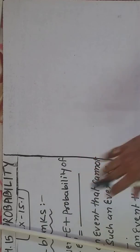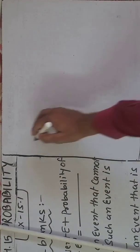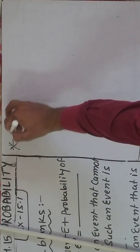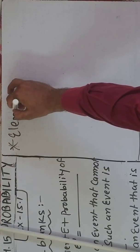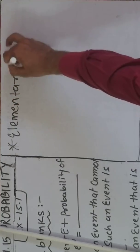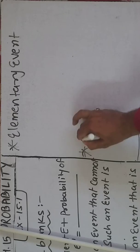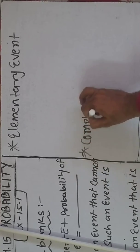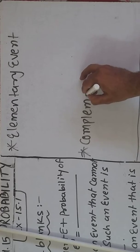Hello guys, last time we were studying about the probability chapter, now we are going to continue this chapter. First of all, we have to discuss two definitions which are very important. First is the elementary event, and the other is the complementary event.